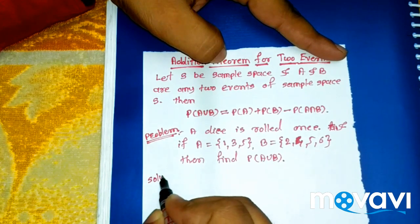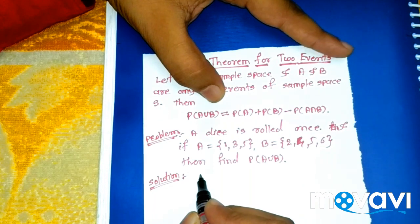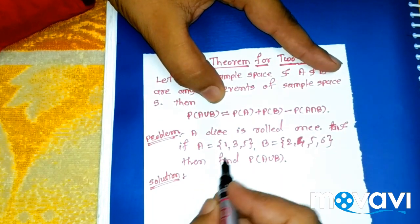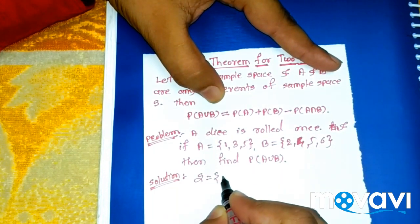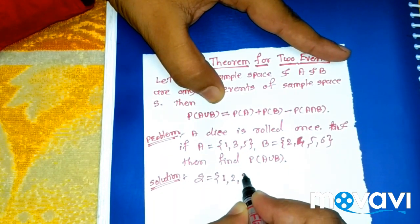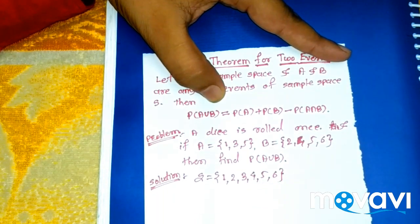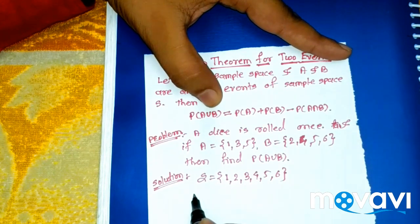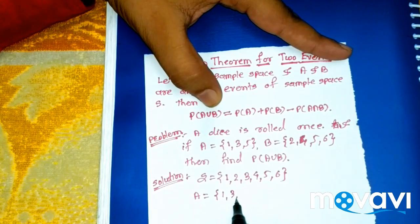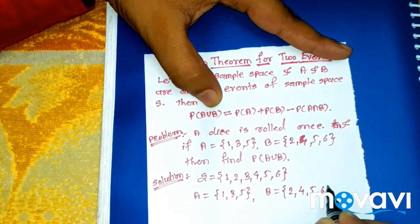Solution. If we roll a die, there are six faces: 1, 2, 3, 4, 5, and 6. So these are six outcomes. Given event A is {1, 3, 5} and event B is {2, 4, 5, 6}.